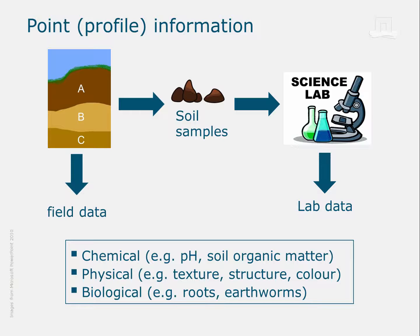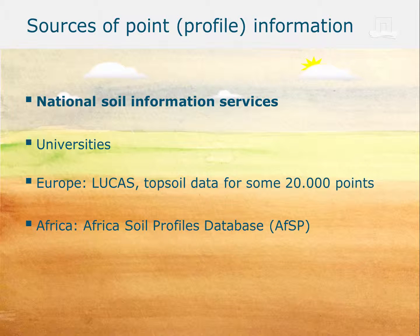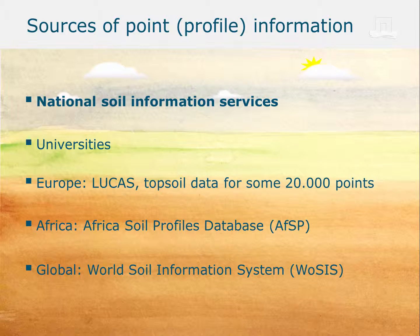But remember, this is just one point in the landscape. You can only dig so many soil profiles yourself, and many people have done this in the past. So we can rely on existing point or profile information from a wide range of sources. Try searching the website of your national soil information service for a start, or soil institutes at universities. In Europe, there is a rather large dataset called LUCAS with information from some 20,000 points. And for Africa, ISRIC World Soil Information has compiled a database with a similar number of entries. If you cannot find anything for your area, try searching the ISRIC WOSIS dataset that holds more than 100,000 soil profiles from all over the world.